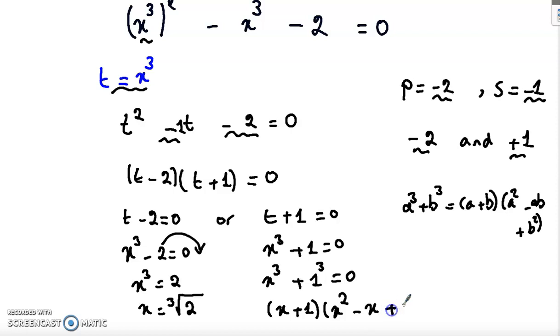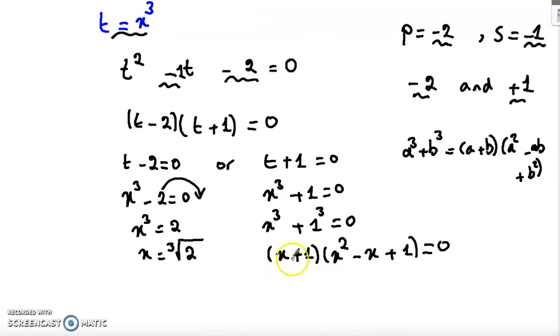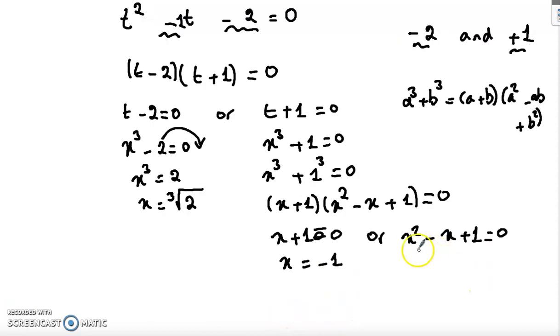Now either x plus 1 equals 0, or x squared minus x plus 1 equals 0. So x equals minus 1. Now to solve this quadratic equation, we need to find the discriminant delta.